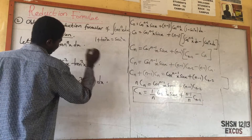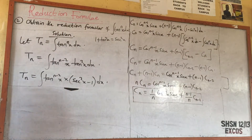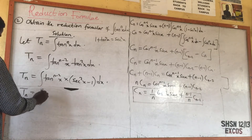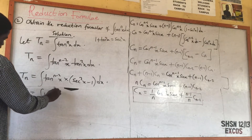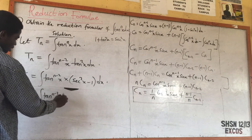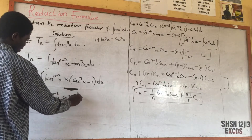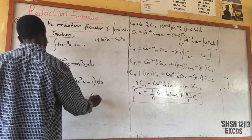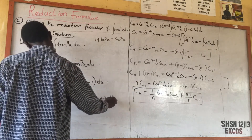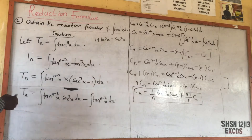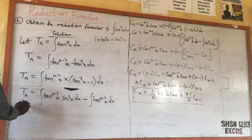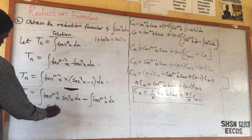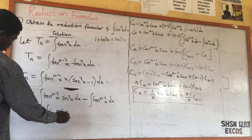Minus one, ds. If you open the brackets, T_n equals the integral of tan^(n-2)(s) times sec²(s) ds minus the integral of tan^(n-2)(s) ds.